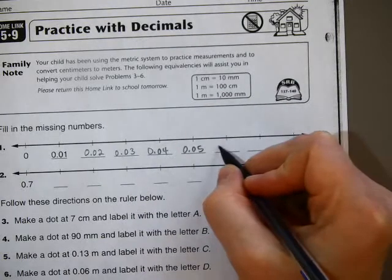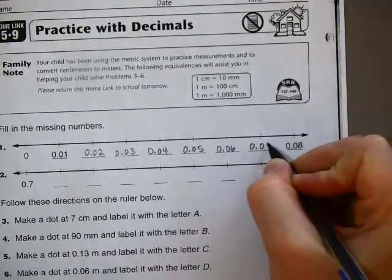So I have 3 hundredths, 4 hundredths, 5 hundredths, 6 hundredths, 7 hundredths.